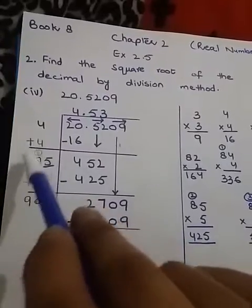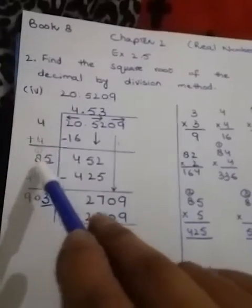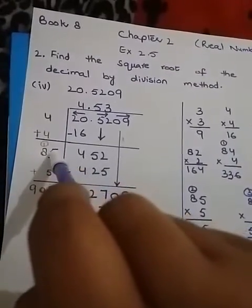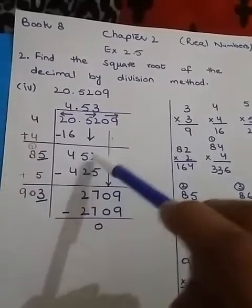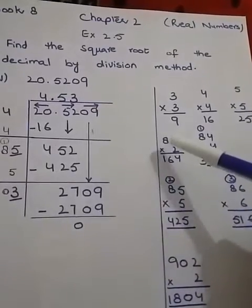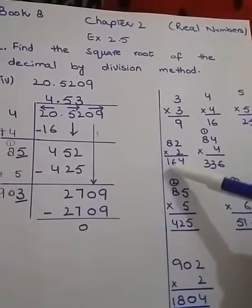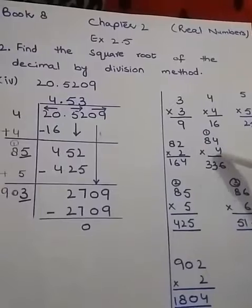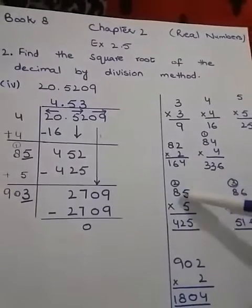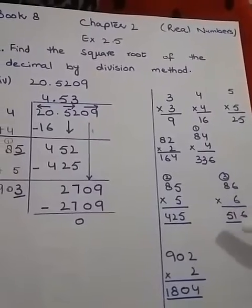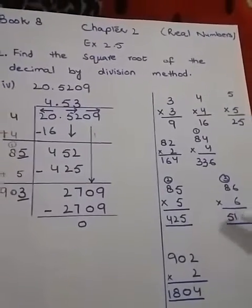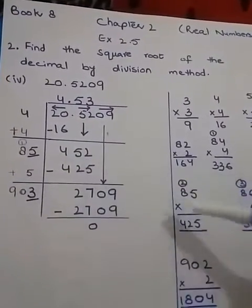Now we have to find this digit. This 8 has come on the tenth place; we have to find a digit on the unit place. The number is 452. I'm going to start: 82×2 is 164, 84×4 is 336, 85×5 is 425.